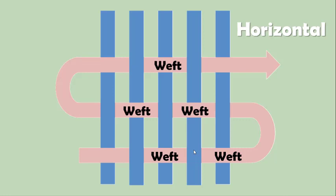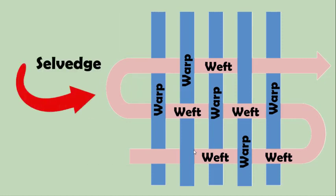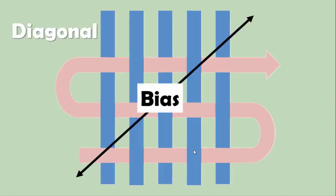The weft yarns are wrapped around the warp yarns to create an edge to the fabric known as the selvedge, while the diagonal or cross grain of a woven fabric is what we call bias.